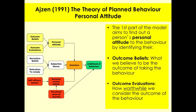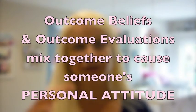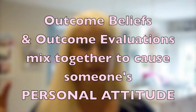The next section is Outcome Evaluations — how worthwhile we consider the outcome of the behaviour. How worthwhile would it be for me to give up smoking? It doesn't necessarily have to be true. Someone might think: I'm really young, it's not going to affect my health much, so I won't worry about it — a negative evaluation. Whereas someone else might think it'll make them healthy and save money, so it's really worthwhile. Outcome beliefs and outcome evaluations mix together to form somebody's personal attitude, which can be positive or negative.